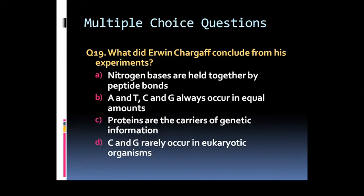Question 19: What did Arvind Chargaff conclude from his experiments? Options are A: nitrogen bases are held together by peptide bonds. B: A and T, C and G always occur in equal amounts. C: proteins are the carriers of genetic information. Or option D: C and G rarely occur in eukaryotic organisms.